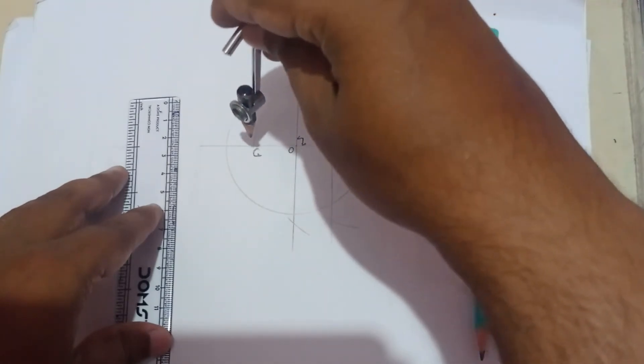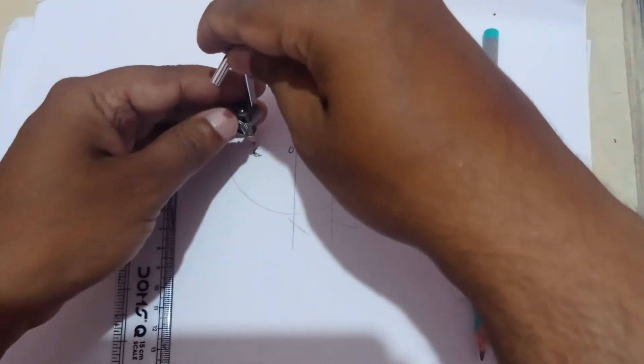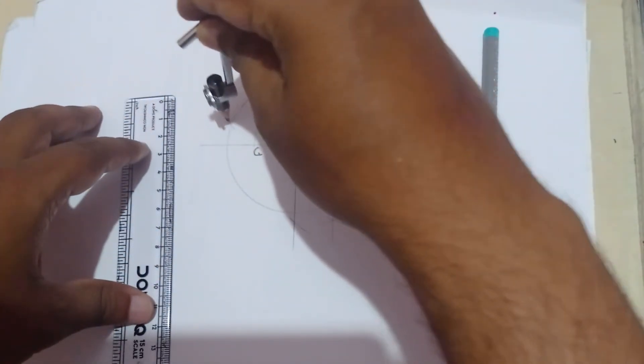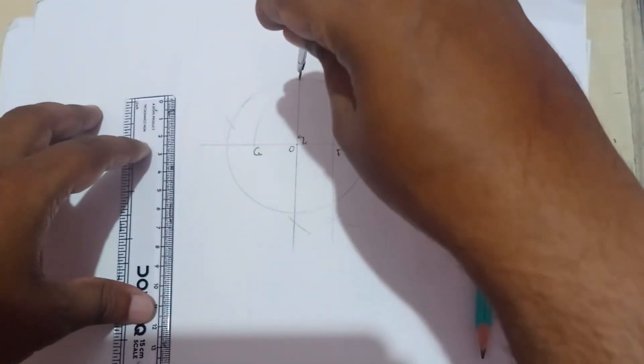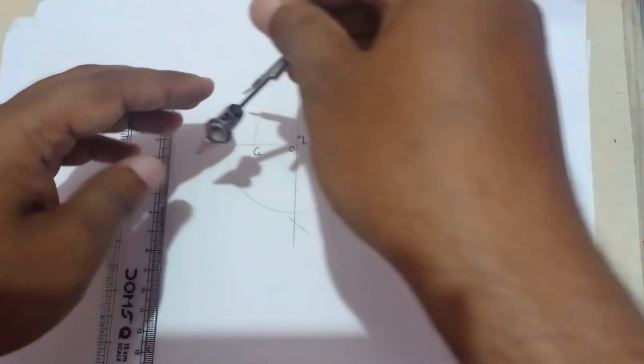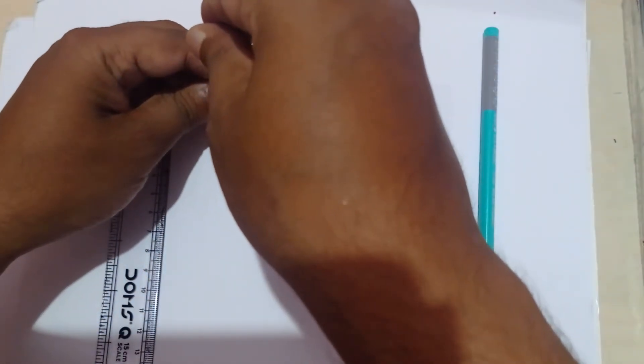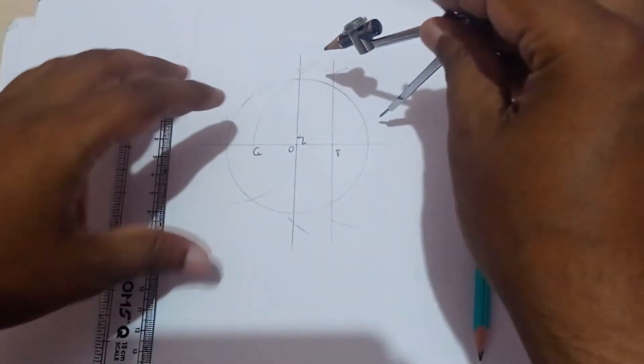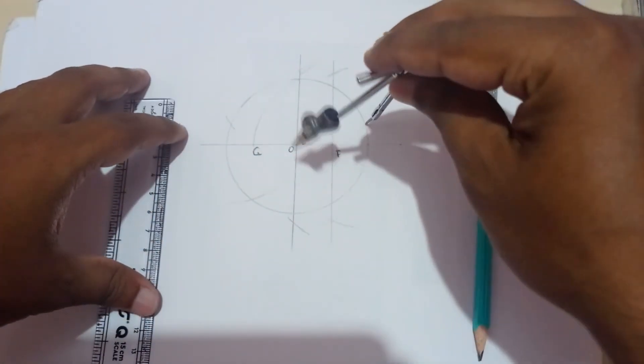From this point to here, measuring the same length, cut here and here. Then after that you need to cut here and again cut here.